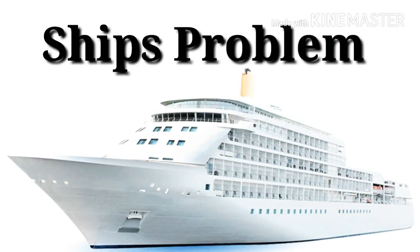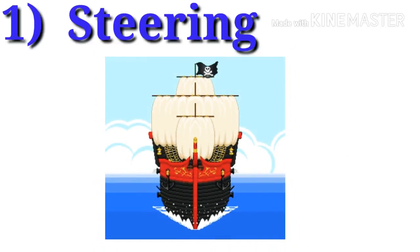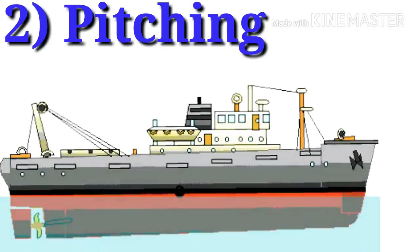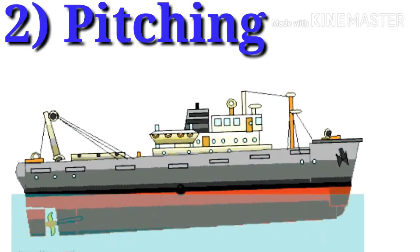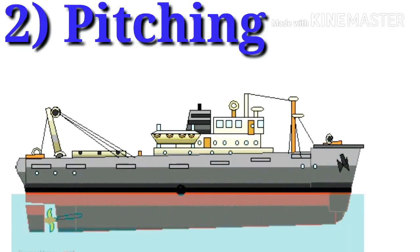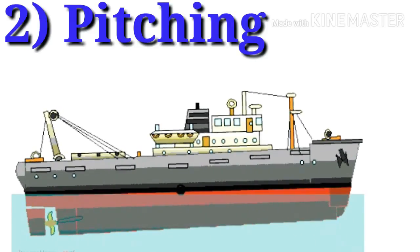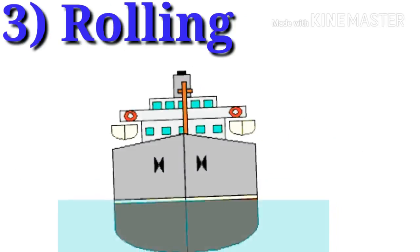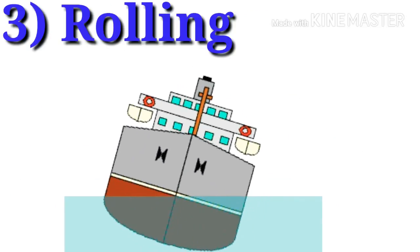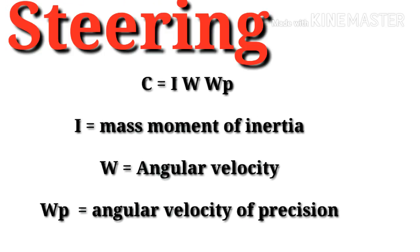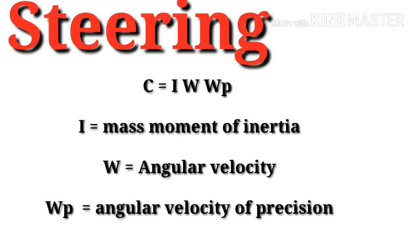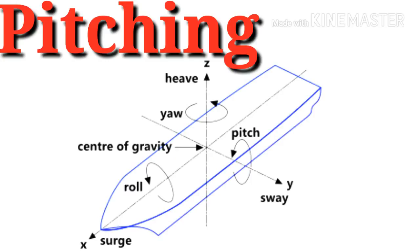For ships, there are three conditions: steering (moving forward), pitching (moving upward and downward), and rolling (rotating sideways). The formula for steering is the same as the aeroplane problem: C = I·ω·ωp. There is some difference in the pitching problem.